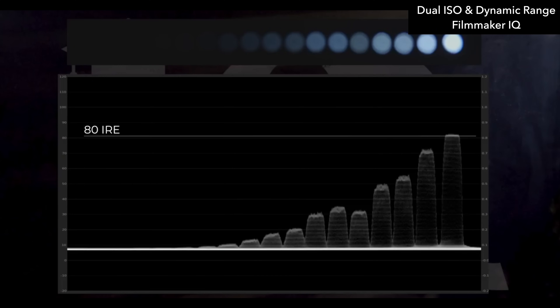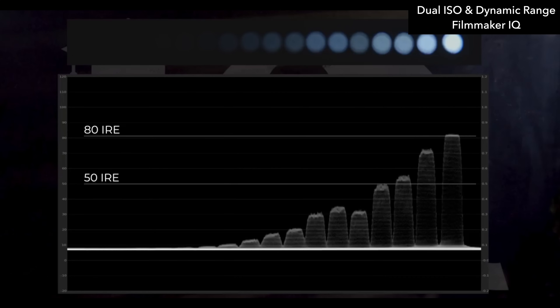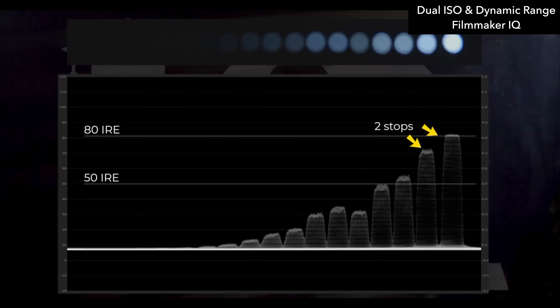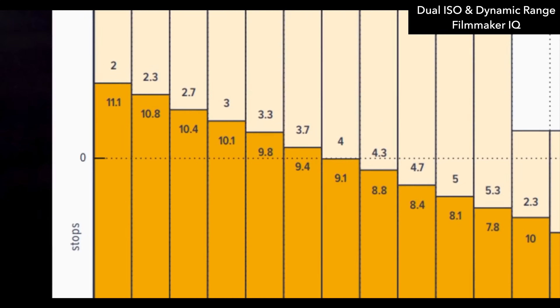I recommend watching the video on dynamic range by Filmmaker IQ — he goes much more into detail and explains it a whole lot better. With dual native ISO you actually have two different settings to work off of when lighting a scene, and they both interpret dynamic range a bit differently.